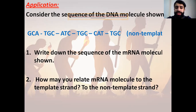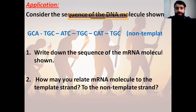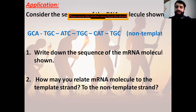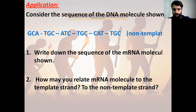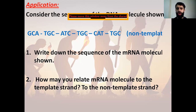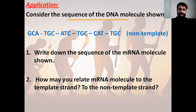Let's move to this application. Consider the sequence of the DNA molecule shown here: GCA, TGC, ATC, TGC, CAT, and TGC. This is the non-template strand. You have to keep in mind that the non-transcribed strand is called the non-template — it's called the coding strand. While the transcribed strand is called the template — it's the non-coding strand. So if we have the non-template or non-transcribed, which is the coding strand, I want to write its complementary, which is going to be the template.